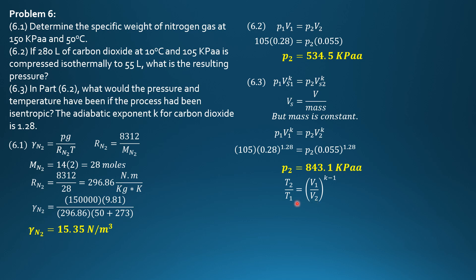So T2 over 10 plus 273, T1 is 10 degrees Celsius plus 273, equals 0.28 over 0.055 raised to 1.28 minus 1 or raised to 0.28. So solving for T2 in Kelvin, T2 is 446.4 Kelvin, and we equate that to T2 in degrees Celsius plus 273. So the final temperature or resulting temperature in degrees Celsius is equal to 173.3 degrees Celsius.